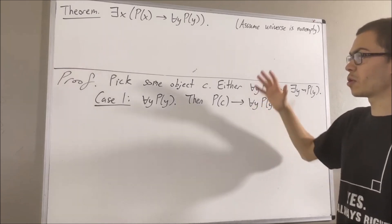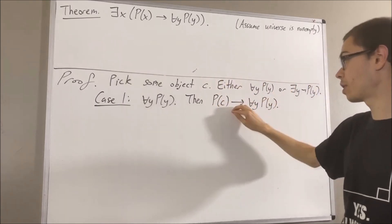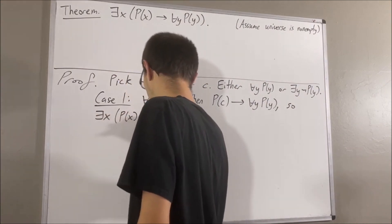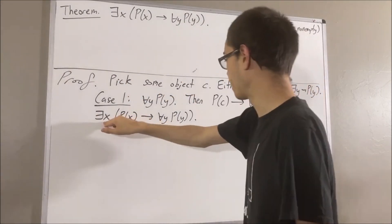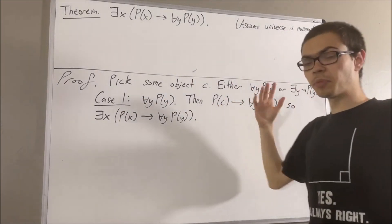So, we see that there is at least one object X such that P of X implies for all Y, P of Y. In particular, if we take X to be C, then it works. So, this completes case 1.